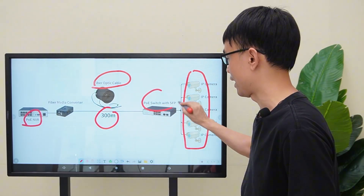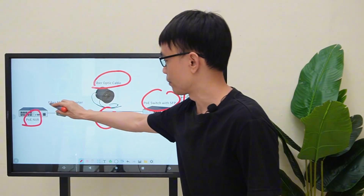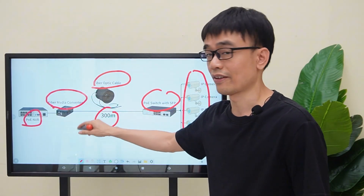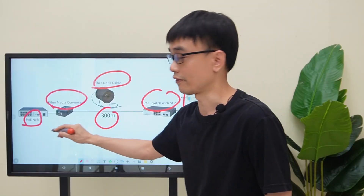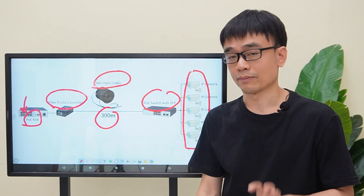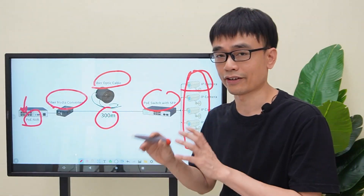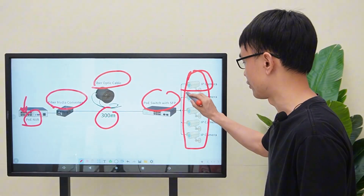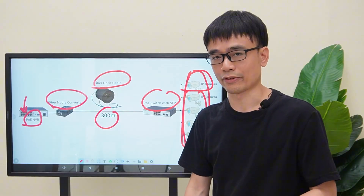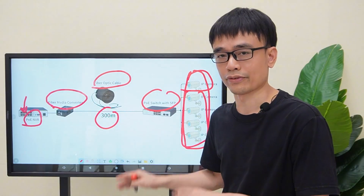He placed a PoE switch at the edge and connected all the cameras to that switch. He then placed a media converter next to the PoE NVR and connected the media converter to one of the PoE ports on the PoE NVR. But he ran into an issue — he could only see one camera on the monitor and couldn't see the other four. Let's move to the demonstration board to simulate this case and find the solution.